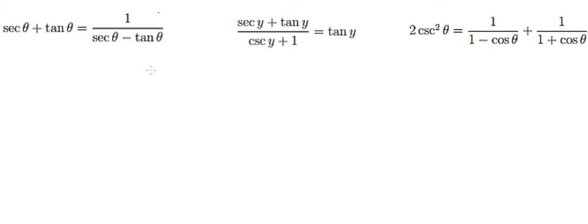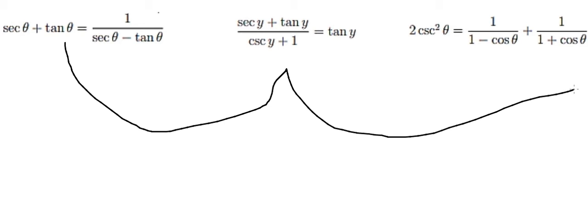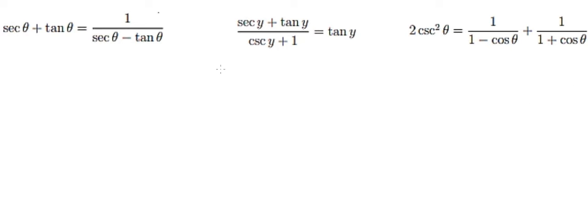Hello everybody. Today I will talk about algebra. The topic is about how to prove trigonometric identities by combining three equations together. I will now show you how to answer question number one, using the identity on the right.